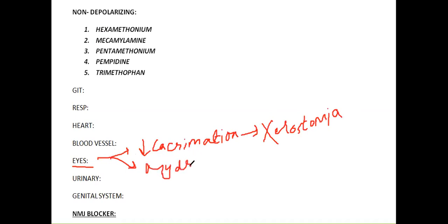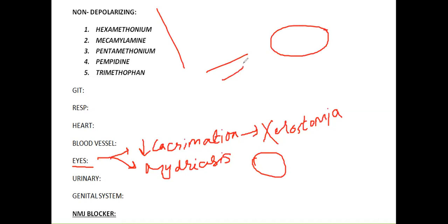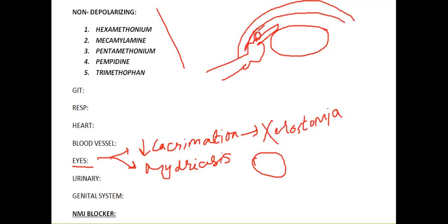Decreased lacrimation leads to xerostomia. Another thing you will see in the eye is mydriasis, because in cholinergic agonist actions you were seeing miosis - acetylcholine caused miosis. But when you do the opposite functions with antagonist drugs, you cause the pupil to dilate. When your ciliary muscles relax, the iris position changes - in a contracted ciliary muscle, the iris is elongated and contracted.